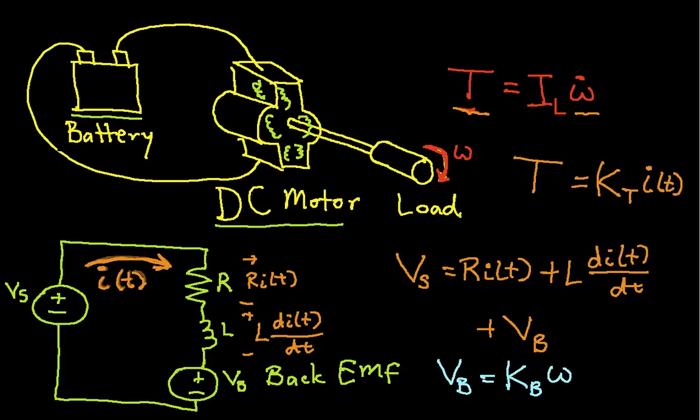Okay, so this K sub B, this constant here, the K sub T, and also R and L, these are parameters that depend on the particular motor that you select. And so for different DC motors, these values will be different.